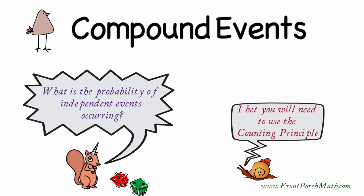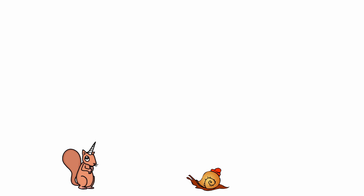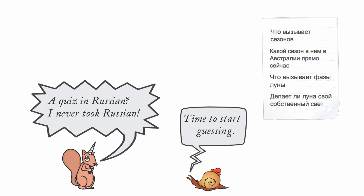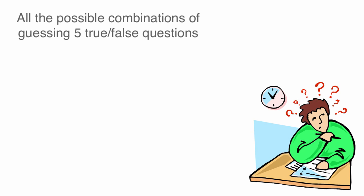To better understand this, let's look at an example. Let's say I was given a quiz in Russian, but I don't speak Russian. The quiz had five true-false questions on it. What is the possible number of ways that it could be answered?